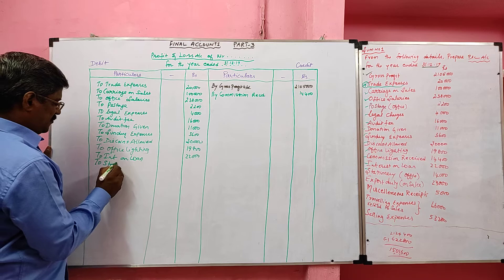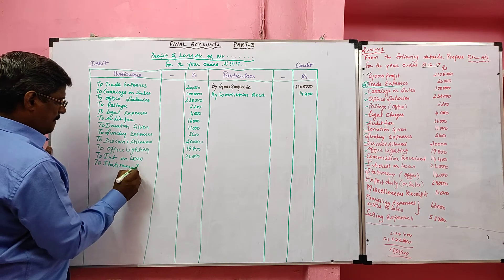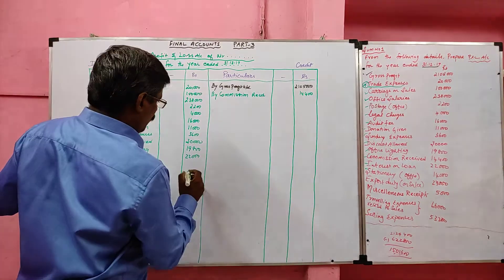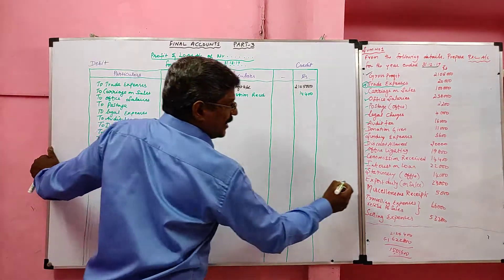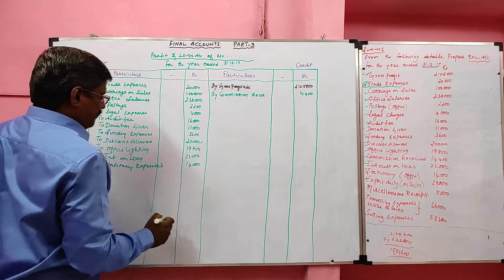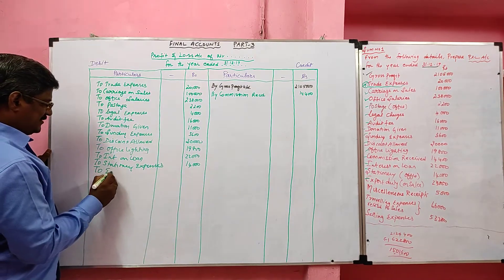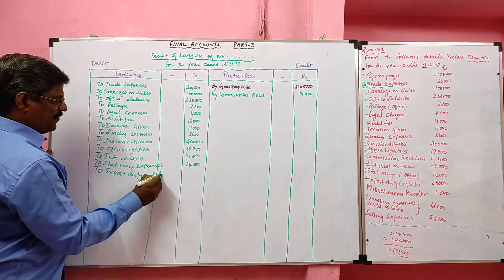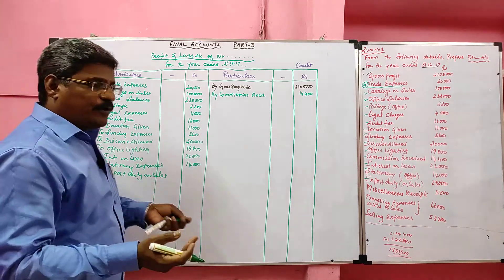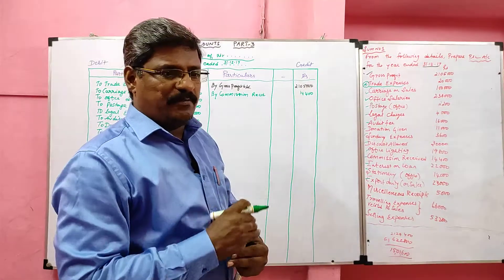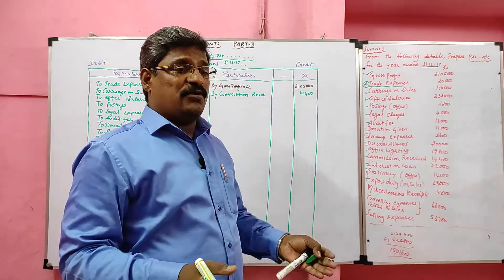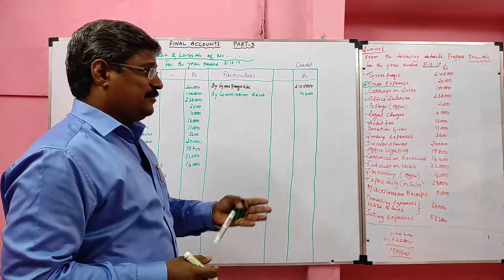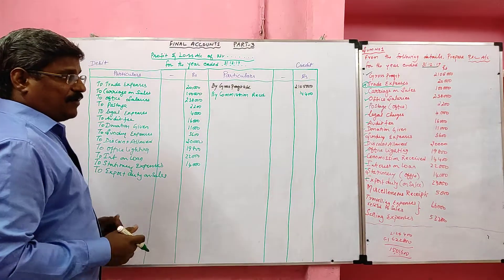Next, stationery is an office expense debited to the profit and loss account, value 14,000 rupees. Next, export duty on sales — when we import goods from another country we pay import duty, which is debited to the trading account. When we sell goods to another country we pay export duty, which is related to sales and is debited to the profit and loss account.